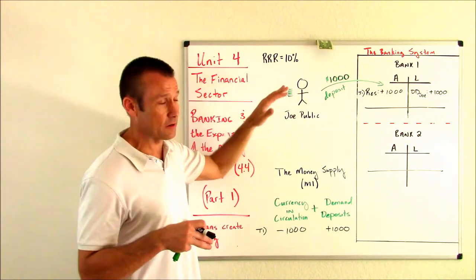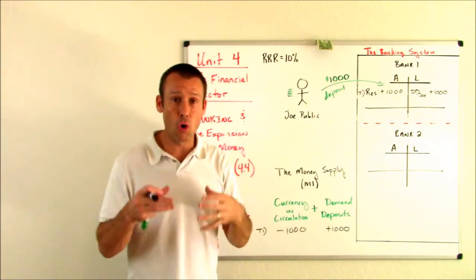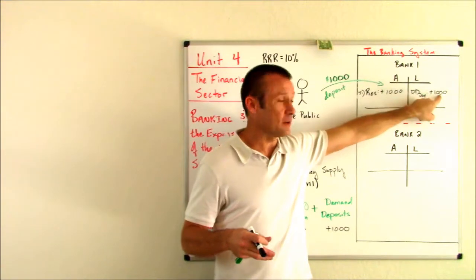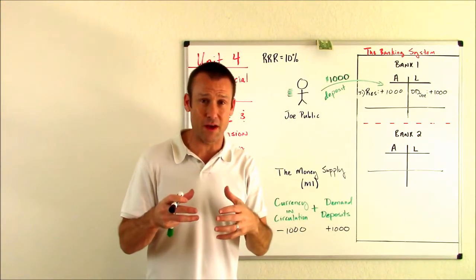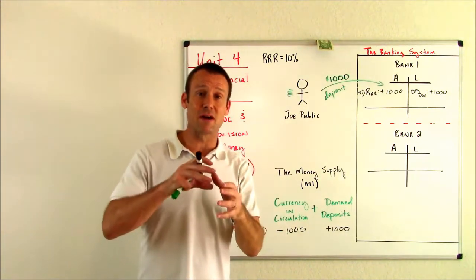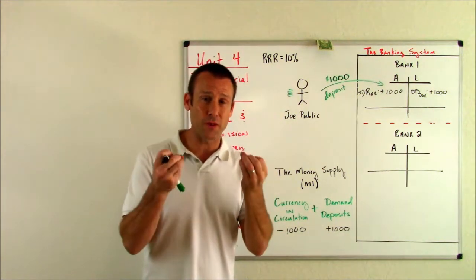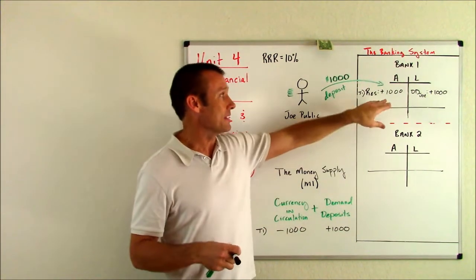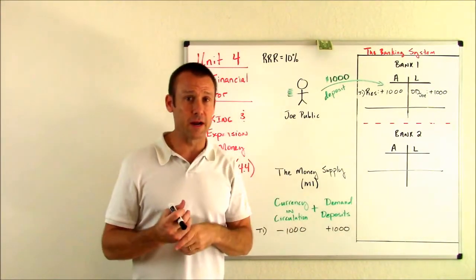The required reserve ratio is the percent of the bank's demand deposits it must hold in reserve. So it got $1,000 in demand deposits. It must hold on to $100 of that $1,000. But that means the other $900 is excess reserves. They can loan out that other $900. That's right. They can't buy goods and services with reserves, but they can loan out reserves.